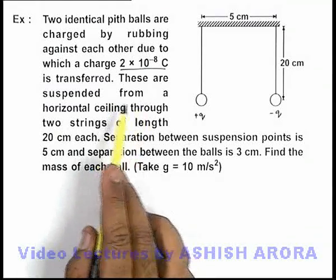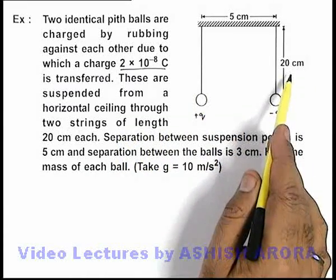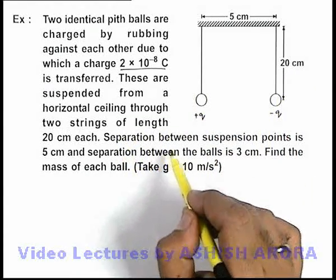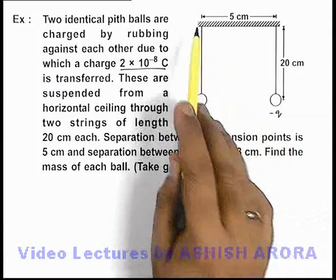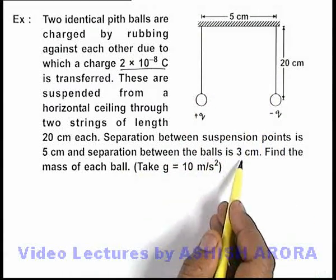These are suspended from a horizontal ceiling through two strings of length 20 centimeters each. The separation between suspension points is 5 centimeters, and separation between the balls is 3 centimeters.